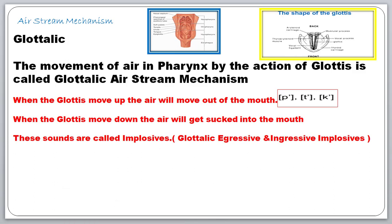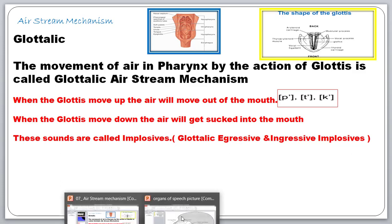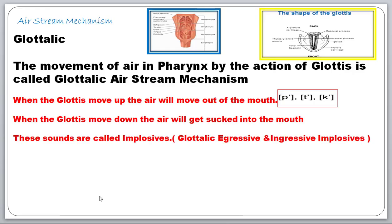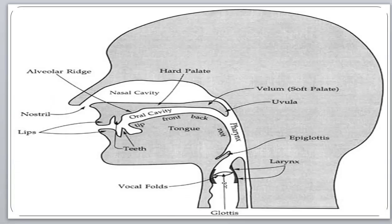The movement of air in the pharynx or larynx — the movement of air in the phonatory system — occurs by the action of the glottis. The air from the respiratory system passes to the windpipe, moves into the opening of the vocal cord, and goes to the pharynx. This passing from the respiratory system through the glottis to the pharynx happens only with the help of the glottis.